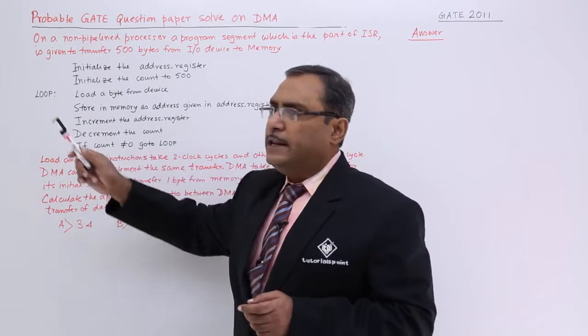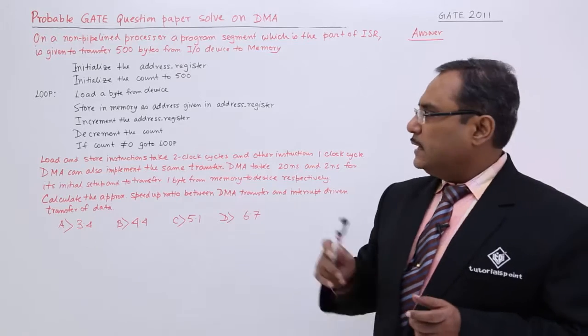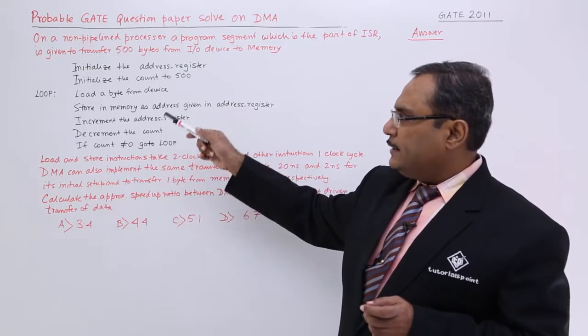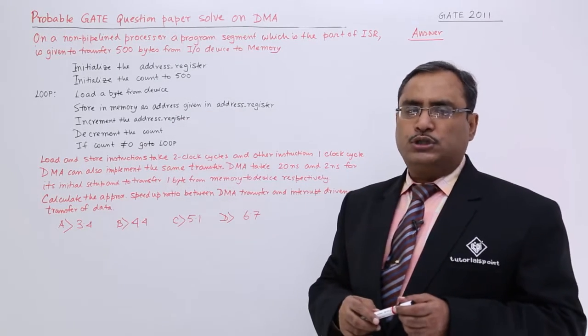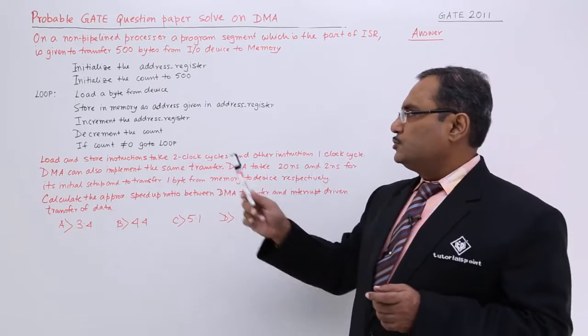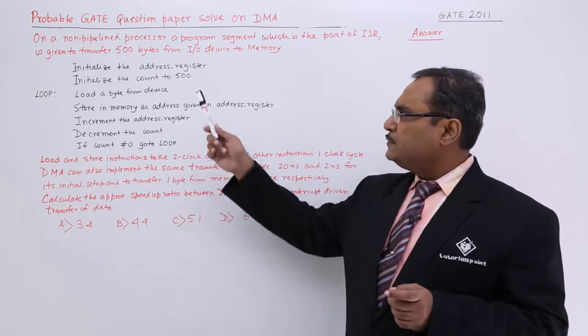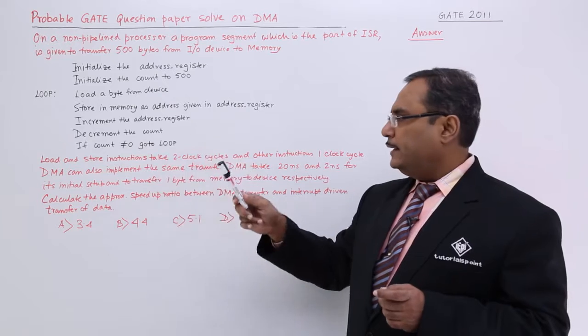If the count is not equal to zero — that means the counter has not been exhausted — then go to loop. Loop is nothing but a label. So it keeps repeating the process for 500 times. That is the problem statement, which is quite straightforward.